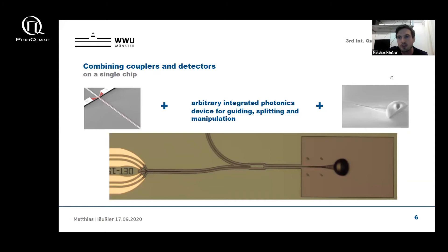However, in between the coupler and the detector we can not only place waveguides and splitters, but we can also place arbitrary photonic devices for guiding, splitting, and manipulating single photons, which makes this configuration here extremely versatile.